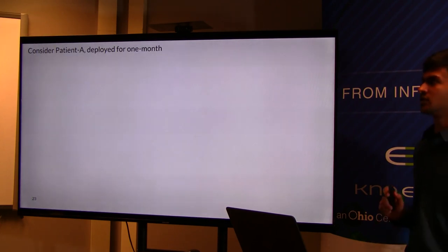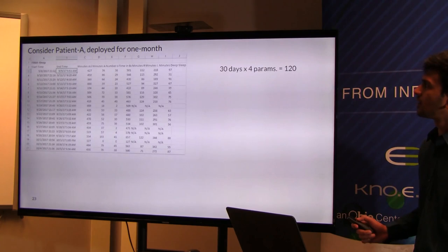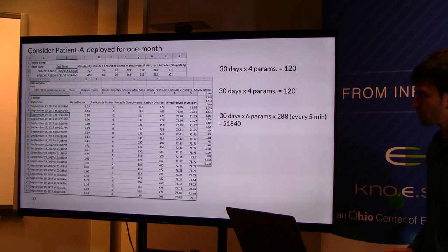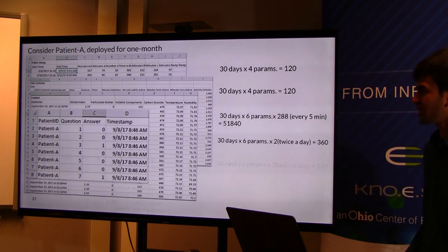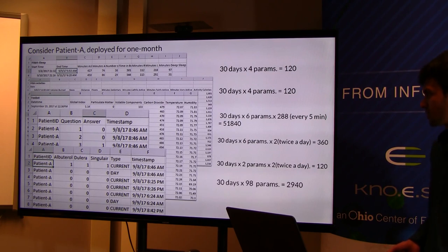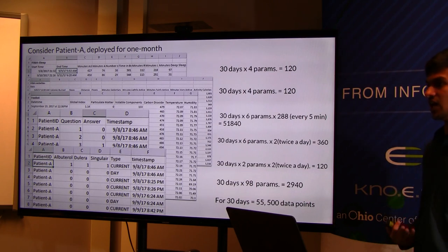Considering a patient deployed for a 30-day period and the kind of data representation currently given to the clinician: for Fitbit sleep and activities, we have about 240 data points in total; for indoor air quality, sampling at every five minutes, it gives up to 51,840 data points; the questionnaire, which captures symptoms and medication usage, collects up to 360 and 120 data points respectively; and outdoor observations collect up to 2,940 data points. In total, for just a 30-day period, we have about 55,500 data points — and given this kind of raw representation to a clinician, it's really hard to understand what's going on.